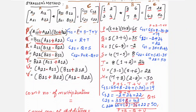Our job here is also to count the number of multiplications. Let us see how many multiplications Strassen's method uses. Here you have one multiplication where A11 + A22 is multiplied with B11 + B22, then 2, 3, 4, 5, 6, 7. Totally, 7 multiplications.